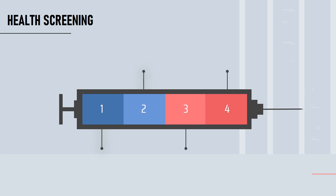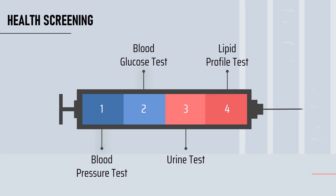Lastly, health screening. The pharmacy will have a suitable area with facilities to perform tests such as blood pressure test, blood glucose test, urine test, and lipid profile test. After the tests, pharmacists will communicate test results to the patient clearly and provide appropriate counseling.